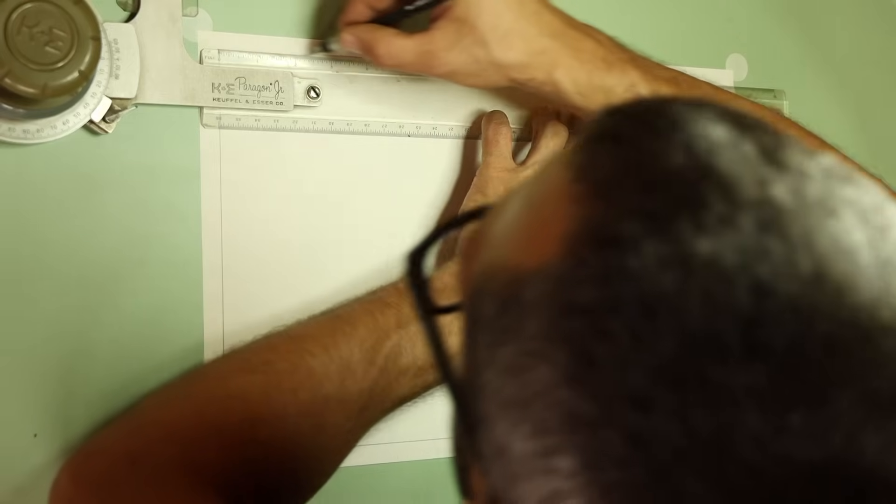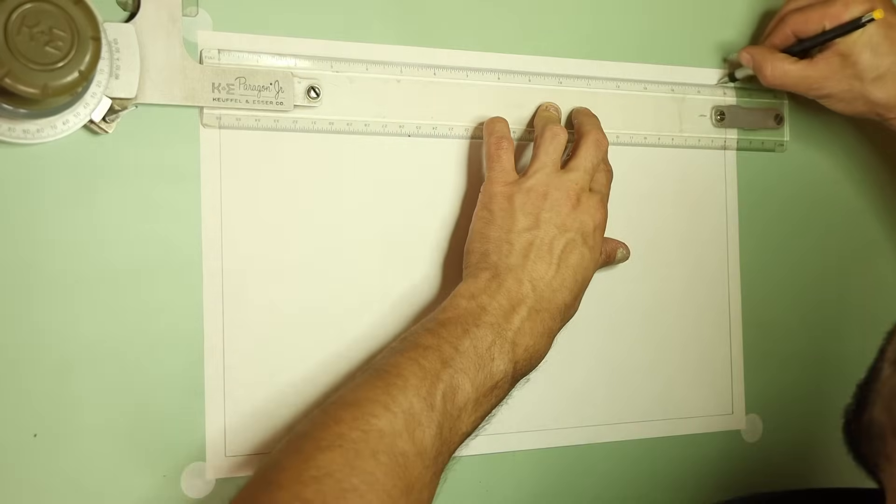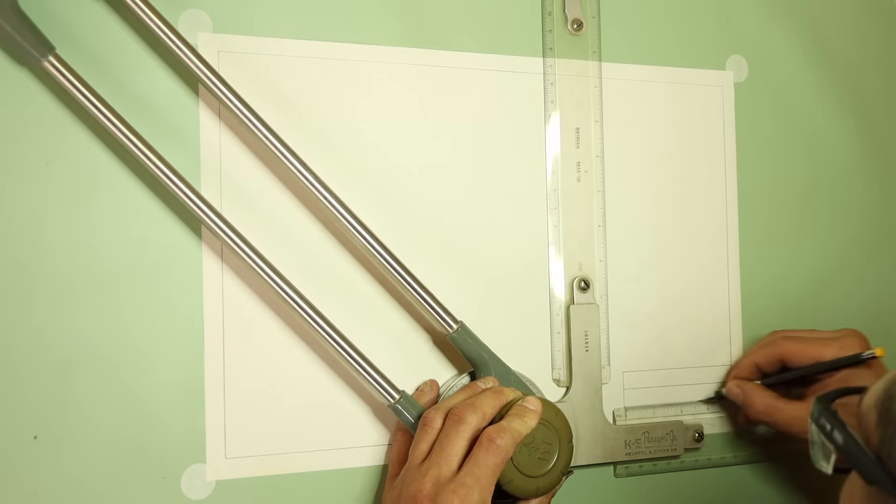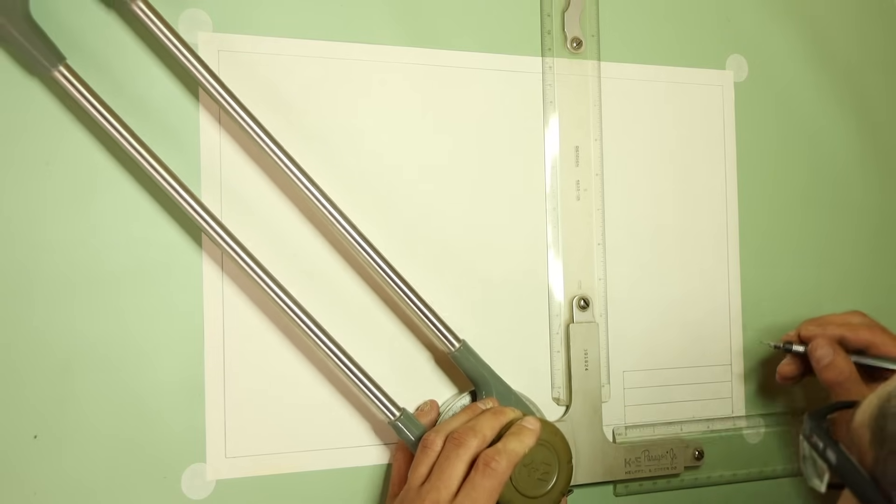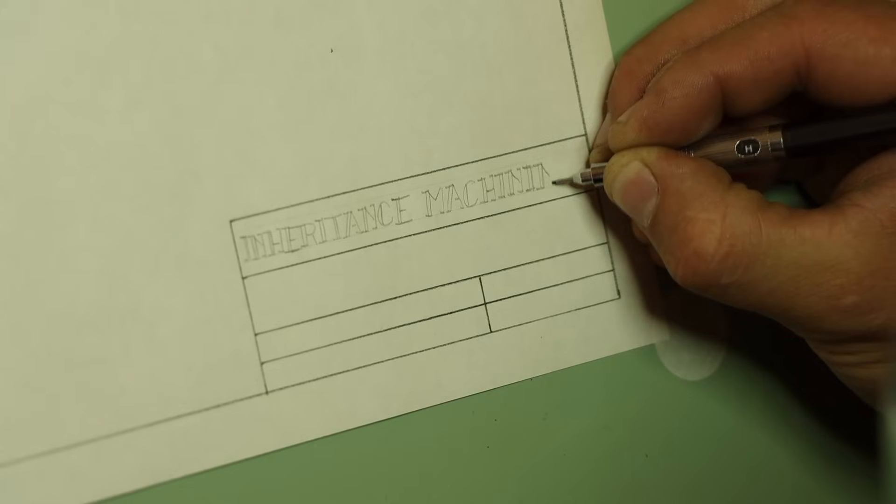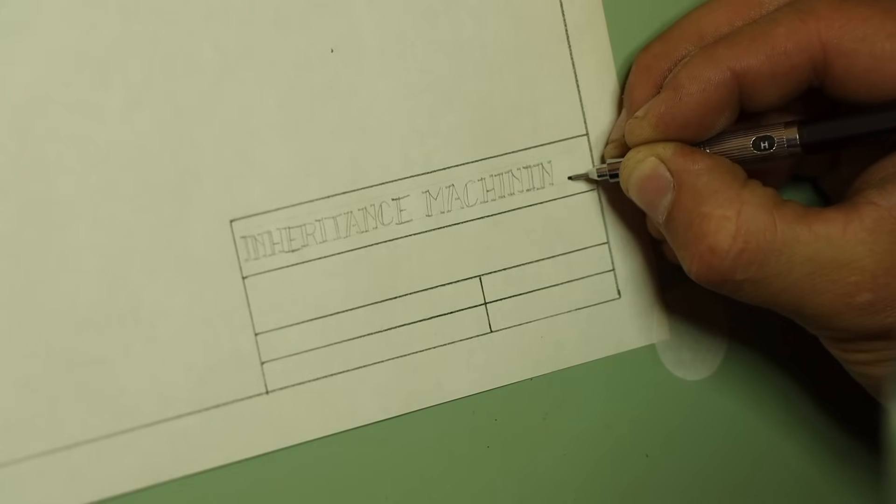To start, I'll draw out the border and the title block. Although I already have some paper that has these on it, it seems silly to use these when it has another manufacturer's name on it. Drawing this out myself lets me keep it simpler and also add my own branding. Got to represent, you know what I mean?